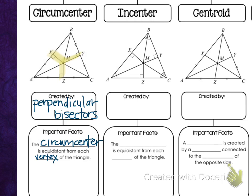An important fact is that the circumcenter is equidistant from each vertex of the triangle. The circumcenter is our point M in the middle, and 'equidistant' means equal distance from each vertex. If we draw a line to each vertex — from A to M, from C to M, and from B to M — all of those lengths are the same. So segment AM equals segment BM, which also equals segment CM.